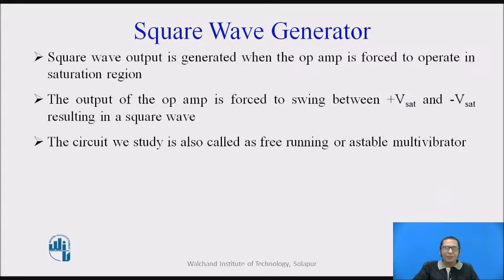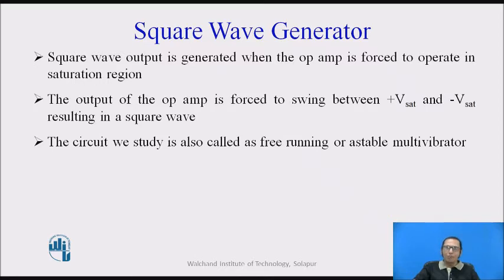In today's lecture, we are going to discuss about a very simple and popular square wave generator. If we are using an op-amp, the square wave generator can very easily be designed. In case of op-amp, we can make the output go into saturation, and we can design a square wave generator where the output is forced to swing between plus-Vsat and minus-Vsat — and if we take this output, that is nothing but a square wave.